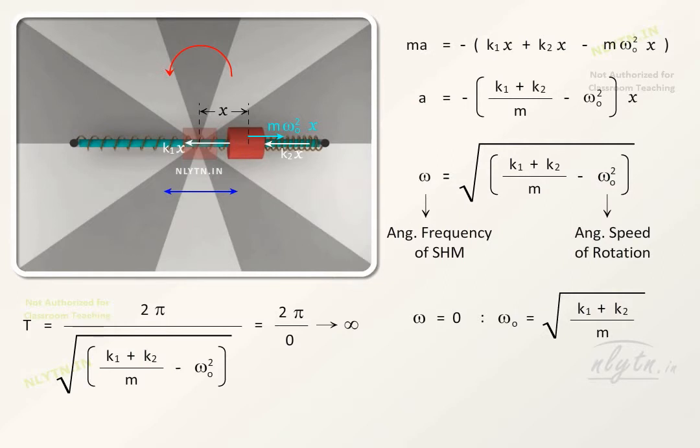This means that for this value of omega naught, the centrifugal force on the block will just balance the force due to the springs.